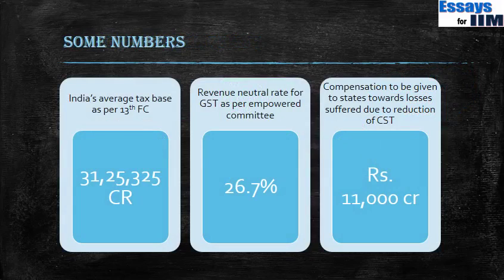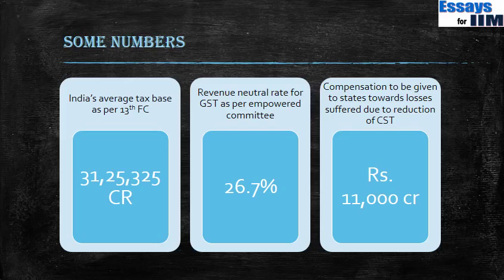India's average tax base, as per the 13th Finance Commission, was around Rs. 31 lakh crores. If GST is introduced, what is the revenue neutral rate — the single rate that would keep government tax revenue constant? That is around 27%, which may seem somewhat high. The CST rate on interstate sales is being reduced; since that tax was imposed by the central government but collected and retained by the states, the states are said to lose a significant amount — up to around Rs. 11,000 crores.